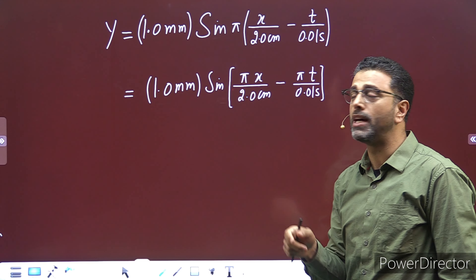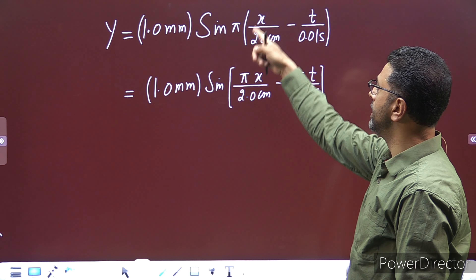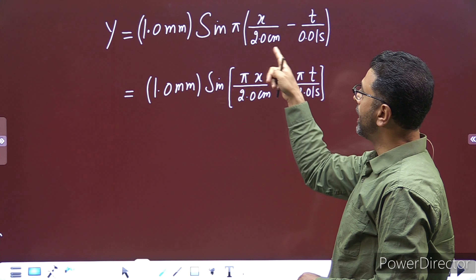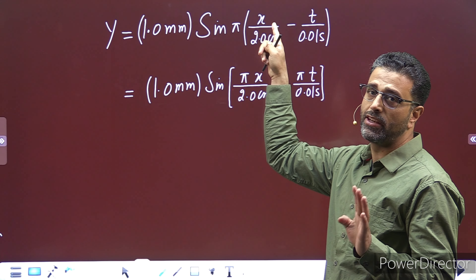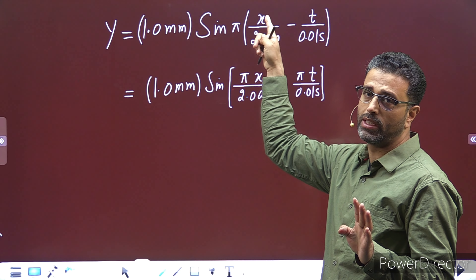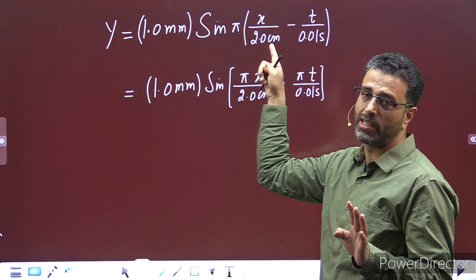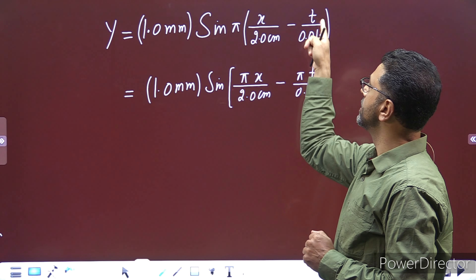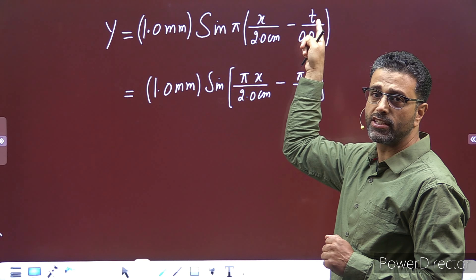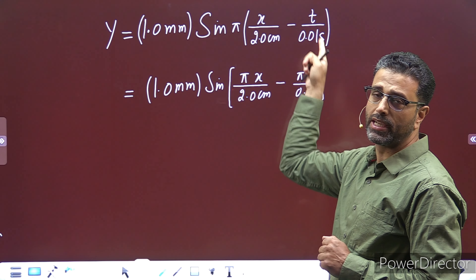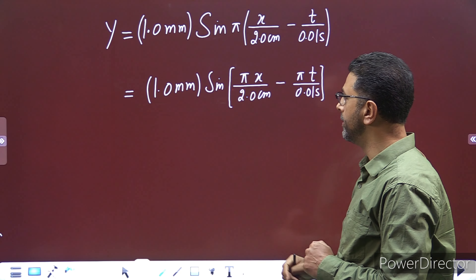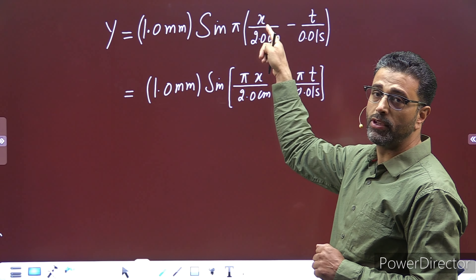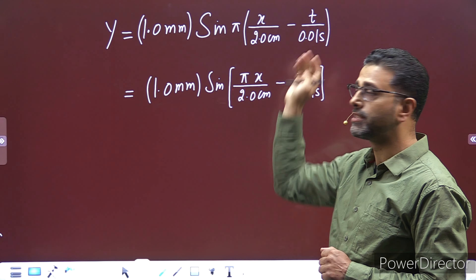पहले वाले sessions में भी यह बात हमने की है कि यह चीज dimension less होनी चाहिए। So अगर यह centimeters में है, x भी centimeters में होगा, तब जाके वो cancel out होगा और dimension less बन जाएगा। अगर यह seconds में है, तो t भी seconds में होना चाहिए। So x is in centimeters, t is in seconds.